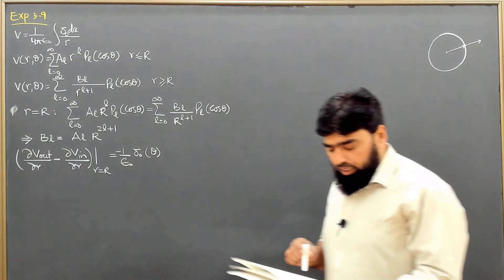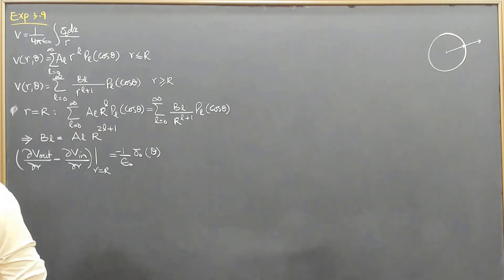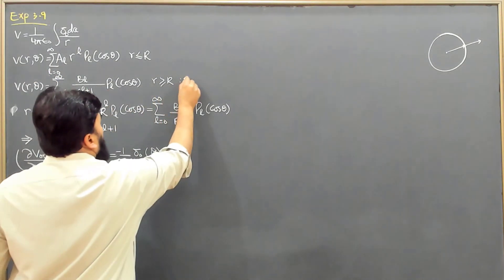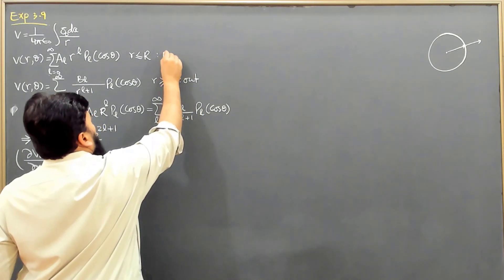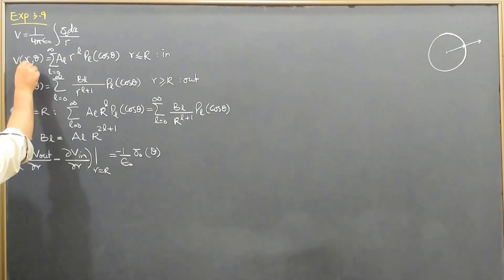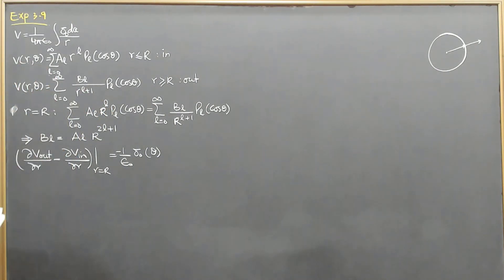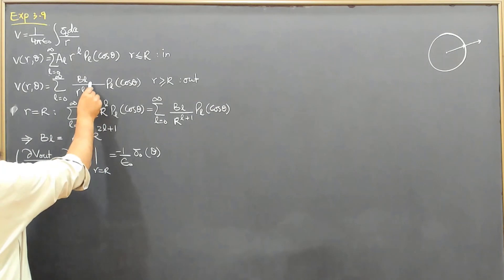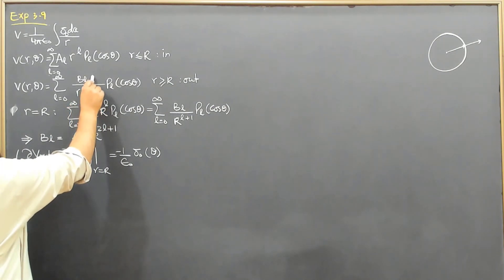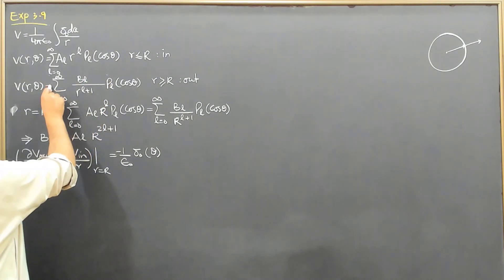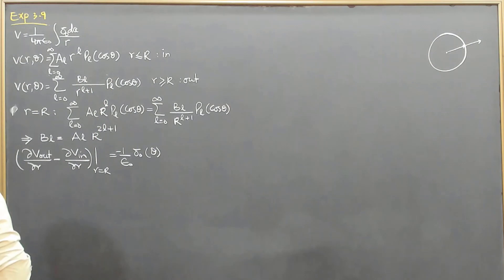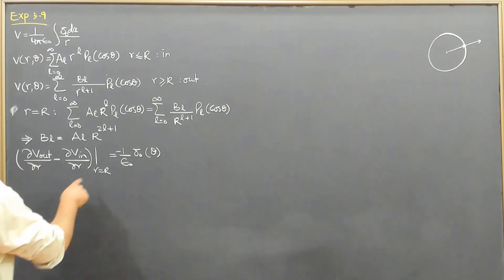We are having this discontinuity because the surface of the sphere has this charge over it. From here we have an alternate equation. We have our equation for V_out and V_in. We will differentiate V_out with respect to R and differentiate V_in with respect to R and then evaluate at r equal to capital R.